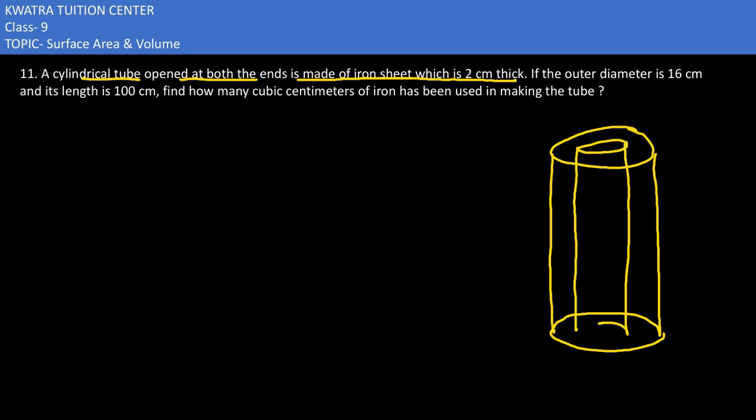The outer diameter is given as 16 centimeters, so the outer radius would be 8 centimeters. We will represent this outer radius as capital R equals 8 cm.